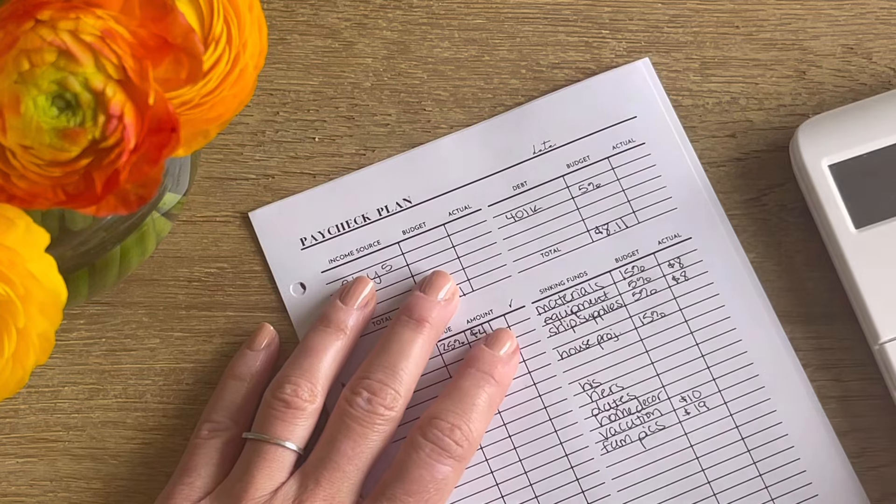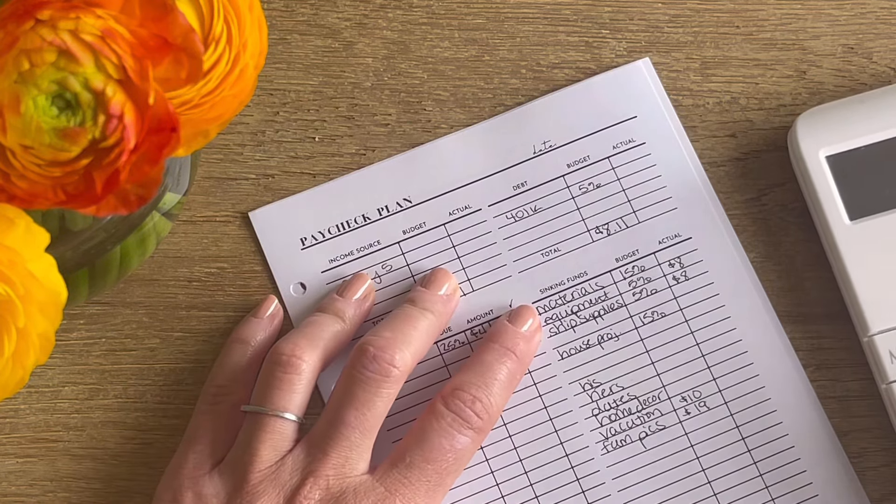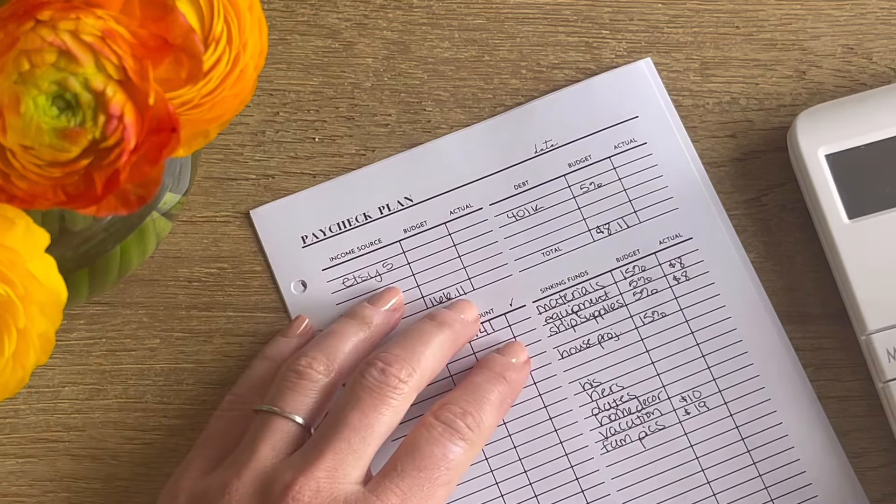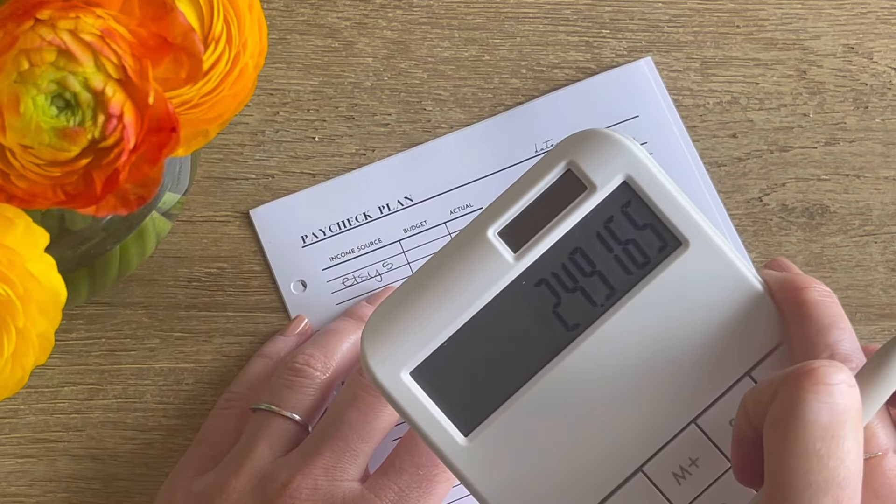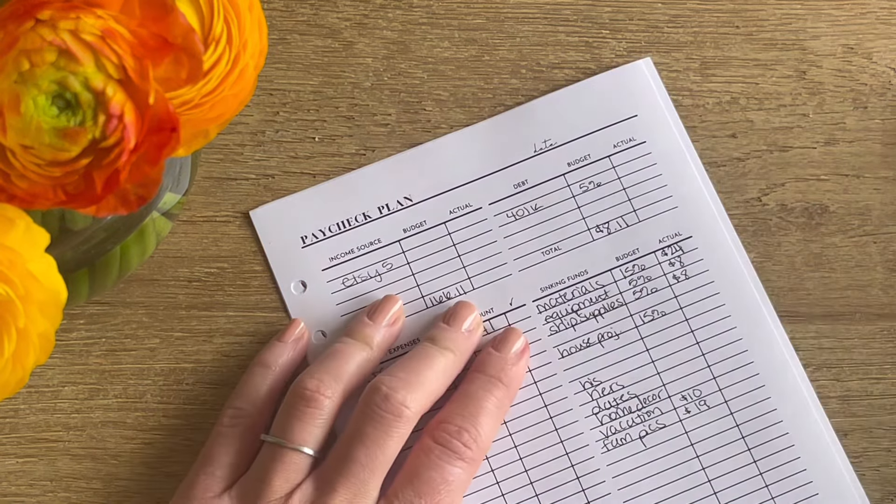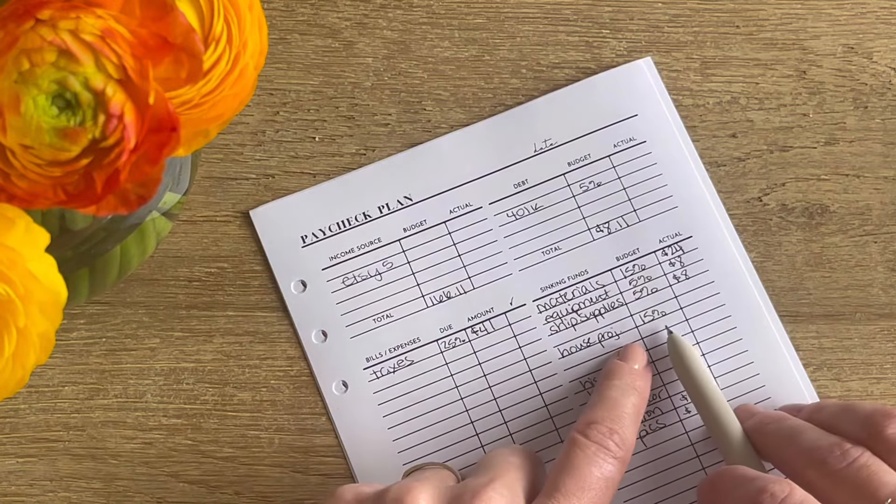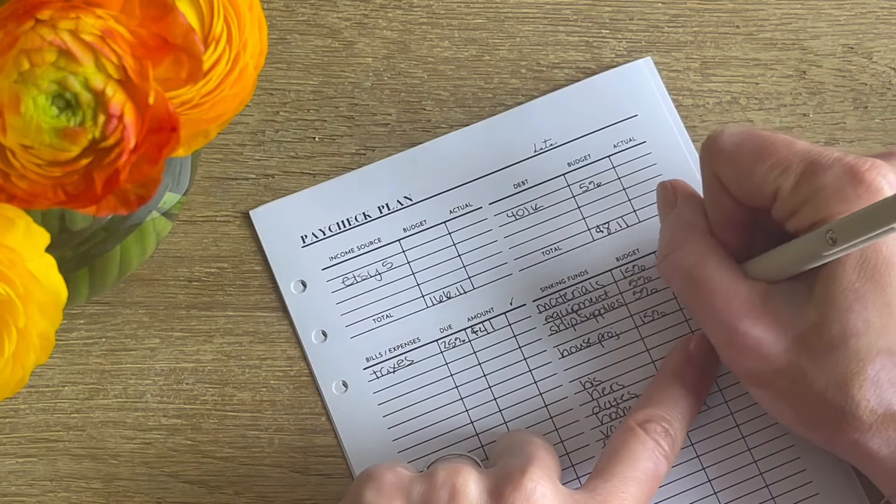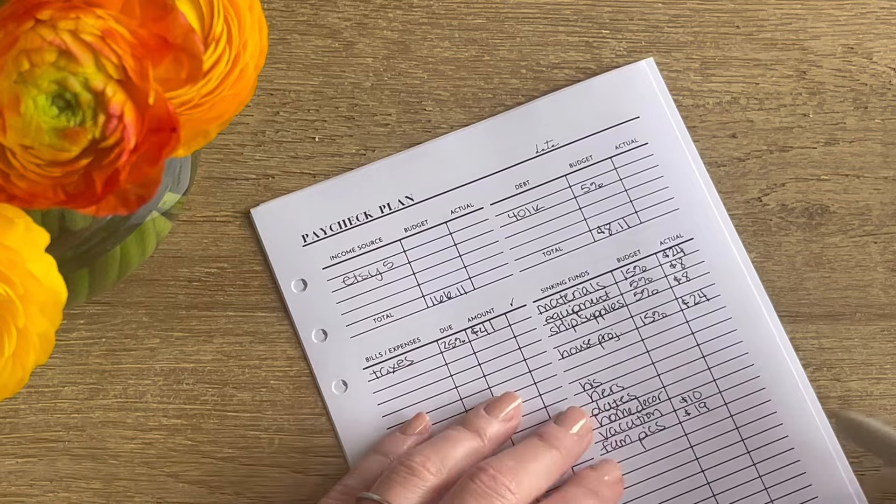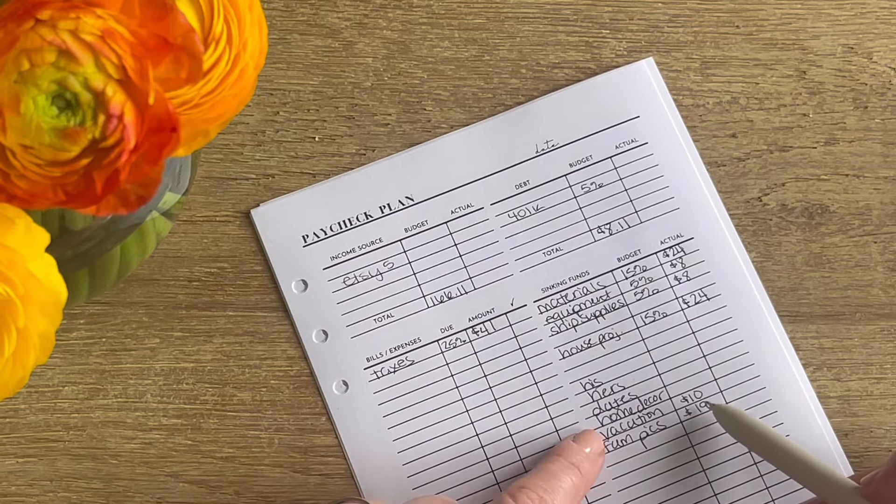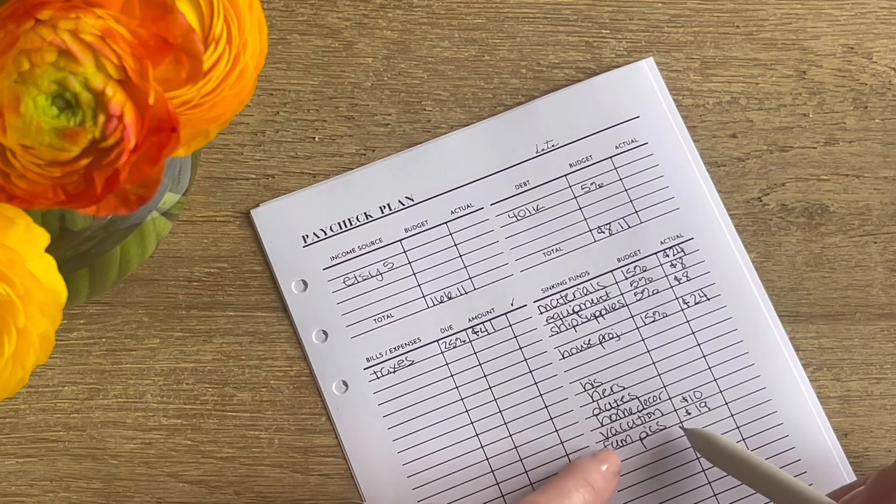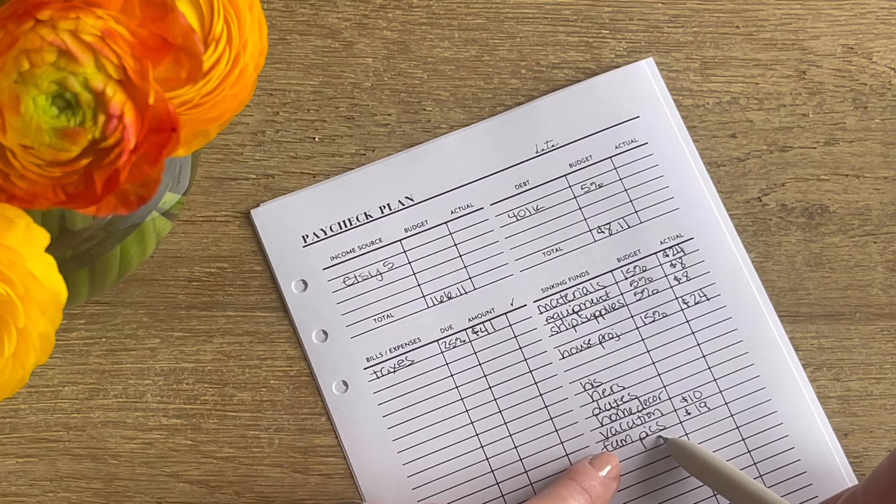And then we will go ahead into materials. So $166.11 times 15%. And that is $24.91. I'm just going to keep it at $24. Sometimes I round up and sometimes I don't, and nobody understands my process. I don't even understand my process. House project also gets 15%. So I'm just going to put that $24 there.